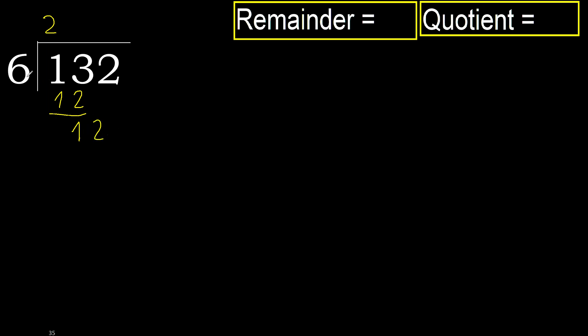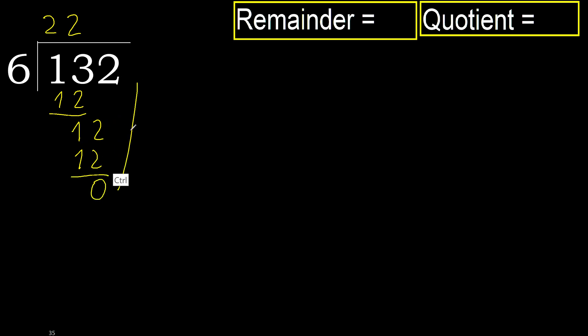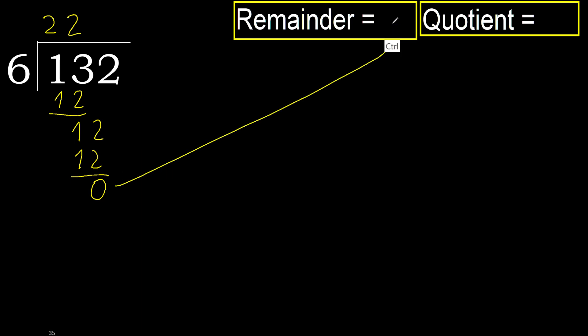Bring down 12. 6 multiplied by 2 is 12. It's not greater. Subtract: 0. Next — that is not a number, therefore finish.